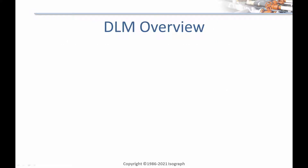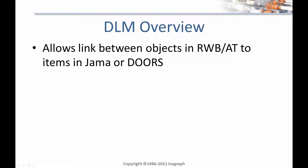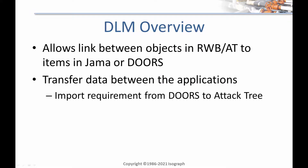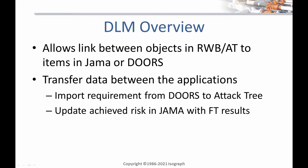To explain at a high level, the DLM allows you to link an object in Reliability Workbench or Attack Tree, such as a gate or failure mode, to an item such as a technical requirement or safety goal in Doors or JAMA. This linkage allows you to transfer data between the two software applications, such as importing a requirement from Doors to Attack Tree, or updating the achieved risk in JAMA with the analysis results from a fault tree.